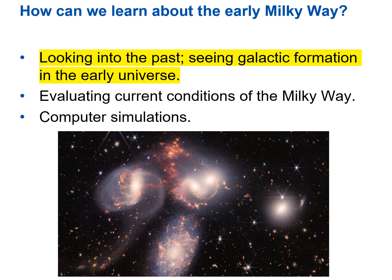As we ponder the early formation of the Milky Way, a good question to consider is how can we learn about the early Milky Way? We certainly weren't there — we're talking about something that happened about 13 billion years ago. The first of three main ways is looking into the past. Remember that the farther away we look, the further back in time we are seeing. We can look across the universe and see other galaxies and how they formed in the early universe.